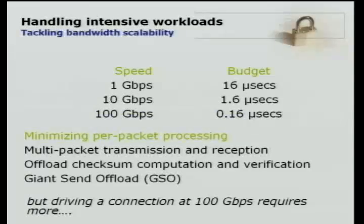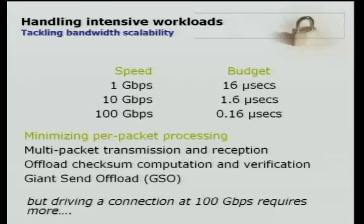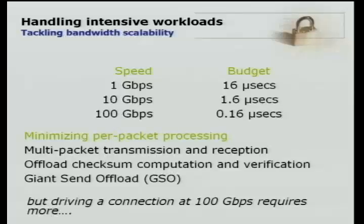The ways to think about tackling intensive workloads involves multiple dimensions of scalability — bandwidth scalability, memory scalability, and so on. Looking at bandwidth scalability: at a gigabit, you have a budget of about 16 microseconds to spend processing every single packet that comes off the wire. If you spend more than 16 microseconds per packet, you fall behind and start dropping packets. At 10 gigabits that goes down to 1.6 microseconds. At 100 gigabits per second, you're down to about 160 nanoseconds to process every single TCP segment. To build a stack that scales to these levels, you have to rethink your approach. We process multiple packets at once, offload checksum computation and verification, and offload chopping up segments onto the wire — but it's still not enough to reach 100 gigabit throughput.